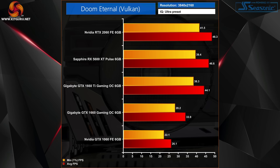We also tested these 6GB cards at 4K, more for interest since they're not really 4K GPUs. The RTX 2060 and 5600 XT did okay, averaging around 45–50fps, but it is a much better experience at higher frame rates, so if you own one of these cards I'd suggest sticking to 1440p for significantly higher frame rates.